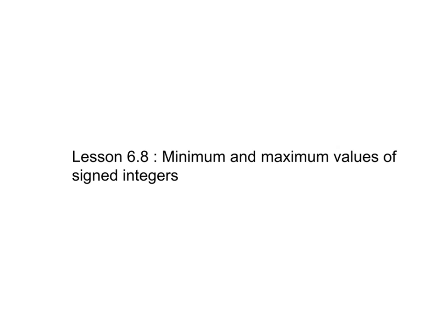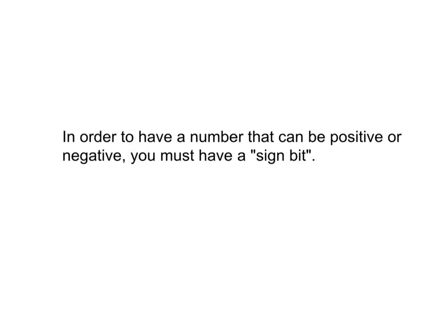Here, I want to expand on this a bit more. Let's consider that we still have 2 bytes to work with — 16 bits — but we want to store both positive and negative numbers. You should remember from previous lessons that this means we need to have a signed bit. The purpose of this lesson is to show you how to calculate the minimum and maximum values for signed integers.